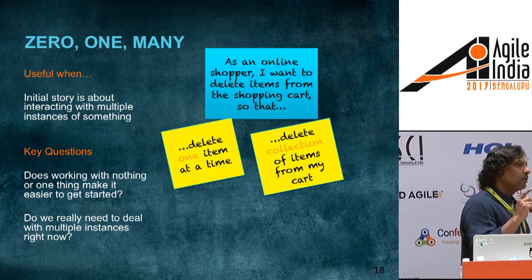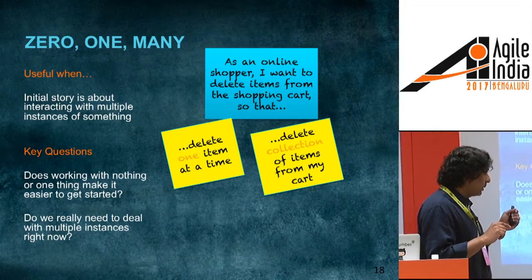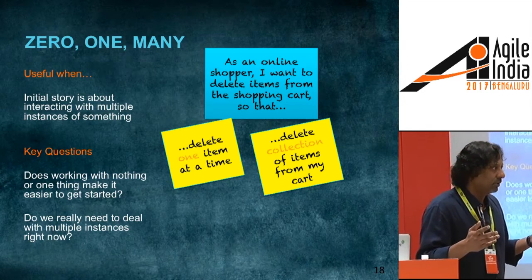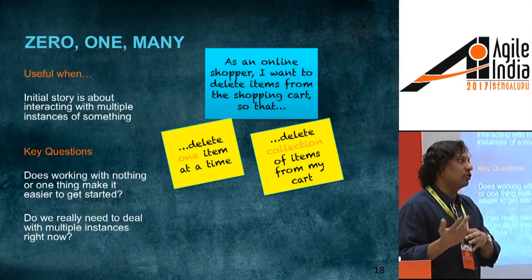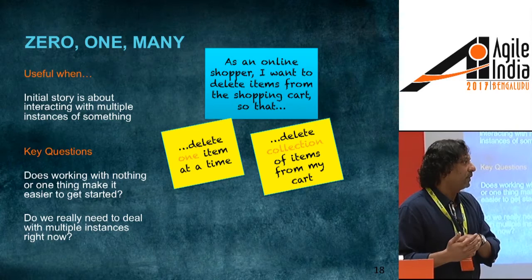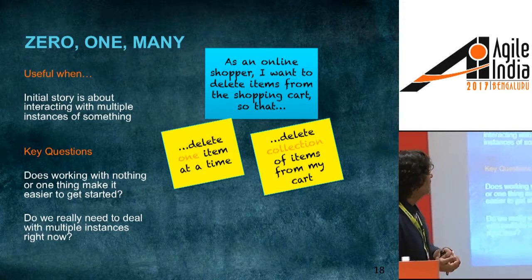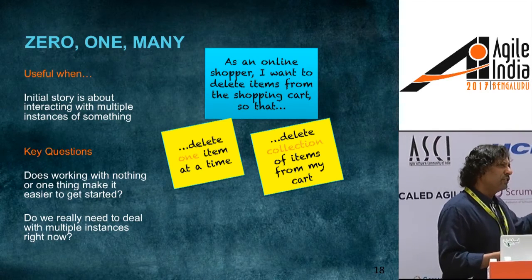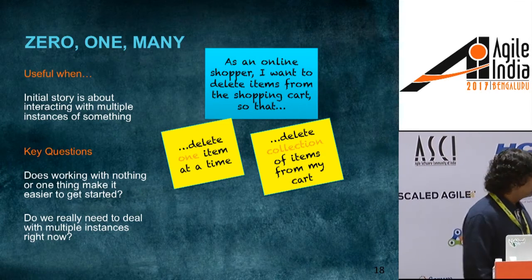There's one important strategy I want to spend time on: business rules. I'll tie that with the notion of acceptance criteria. Business rules provide a strong way to make things smaller from a splitting perspective, and confirmation is an integral part of a story.